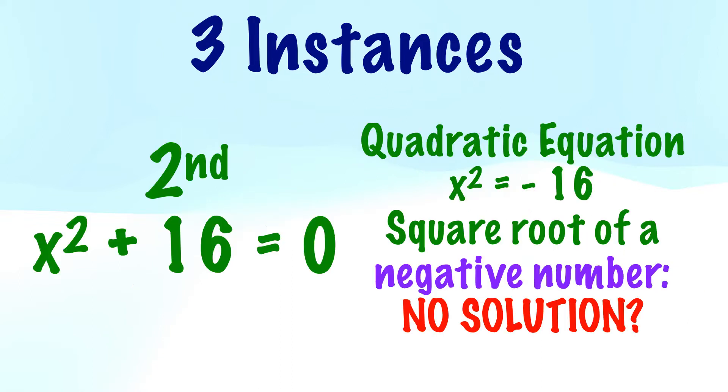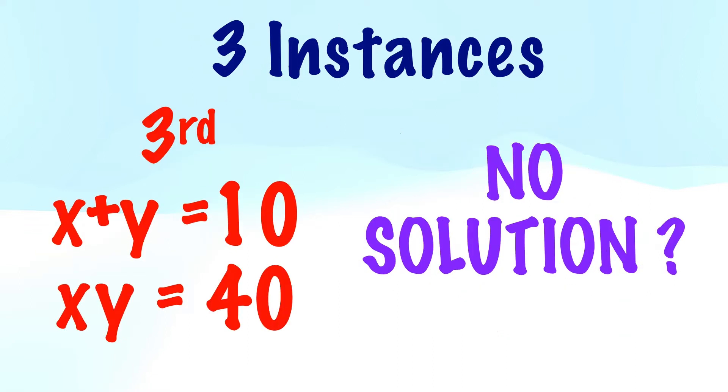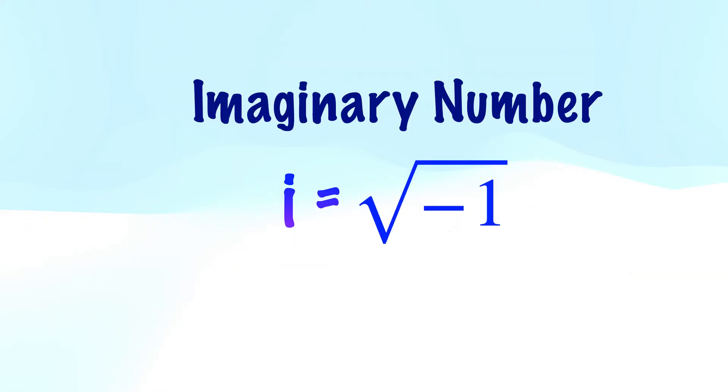In the second one, x square equals minus 16, again square root of a negative number. So at the outset, looks like no solution. In this third one, looks like it is impossible to solve this. Probably these answers are as old as our imaginary number.